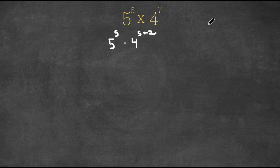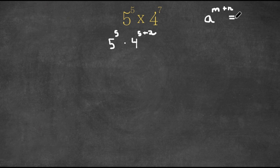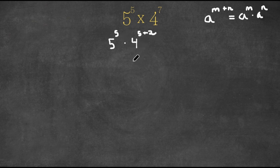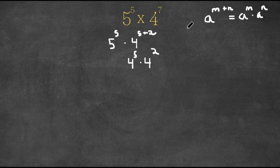Now an important property of exponents is that if we have a to the power of m plus n, this is the same thing as a to the power of m times a to the power of n. So 4 to the power of 5 plus 2 is the same thing as 4 to the power of 5 times 4 to the power of 2, where m is 5 and n is 2, and we're still multiplying this with 5 to the power of 5.